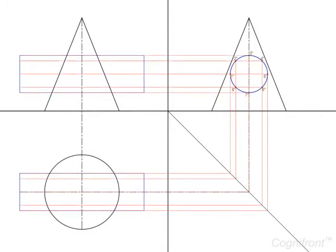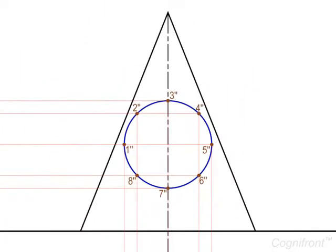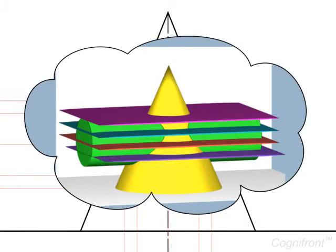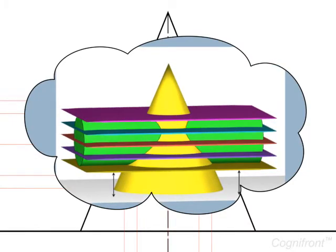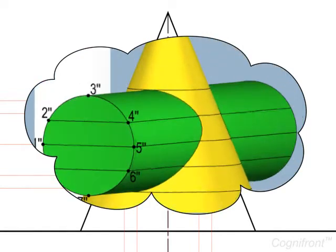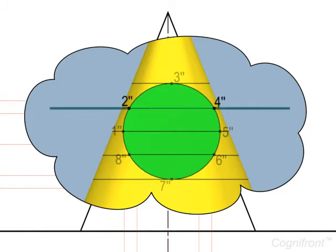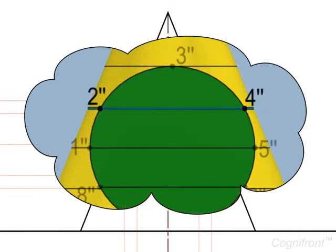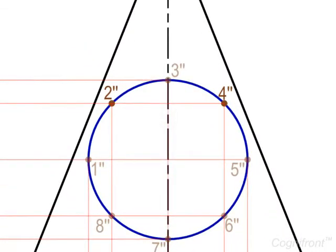To obtain the lines of intersection, we assume that a number of horizontal planes parallel to HP and perpendicular to VP are passing through the intersecting cylinder. In the side view, observe the horizontal plane passing through the points 2-double-dash and 4-double-dash, cutting the cone at points QQ. Draw a line through these points meeting the side view circle at a2, b2 and a4, b4 in the top view.